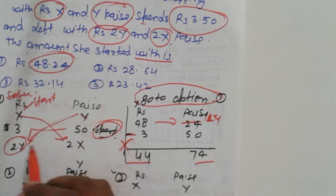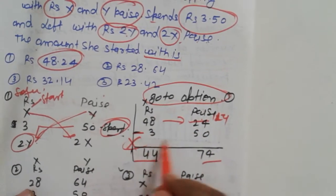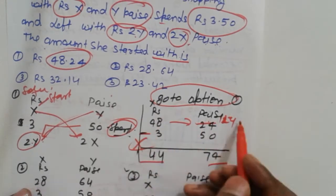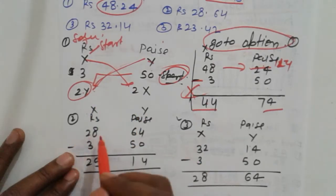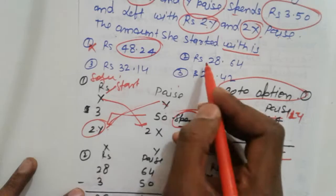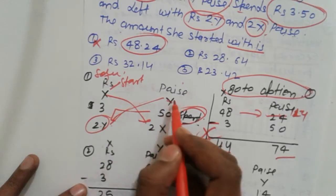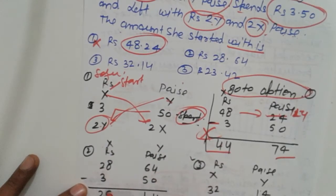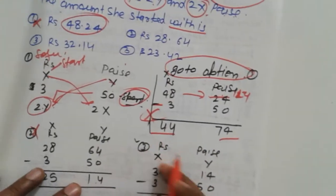First option is wrong because it does not follow the rule. Second option: x = 20 and y = 64. Subtract 3.50, giving 17 rupees 14 paise. The result is not double, so that is also wrong.